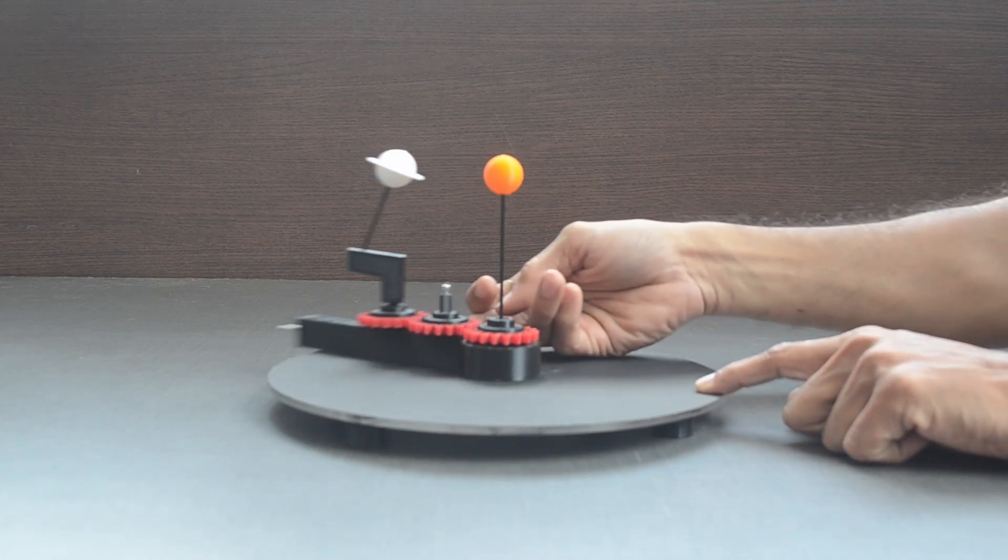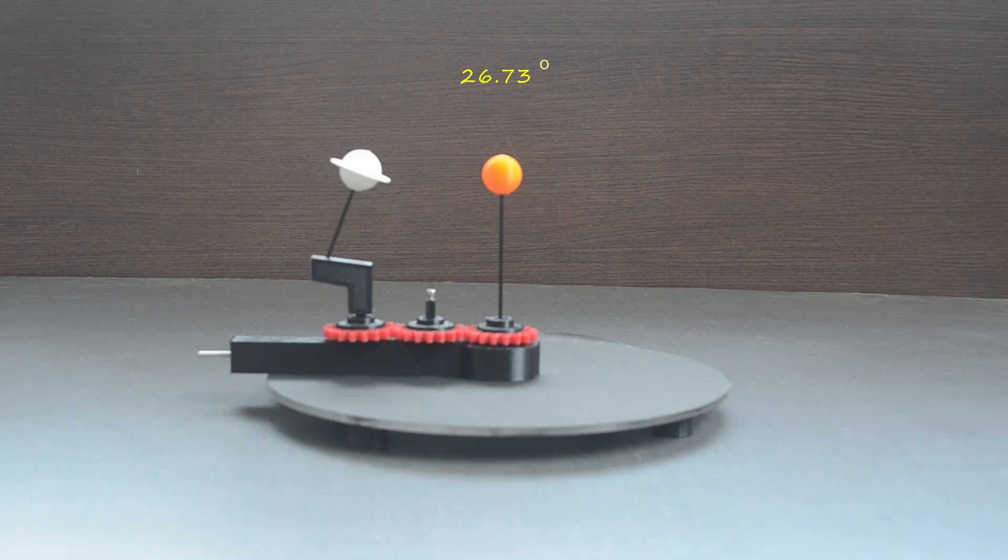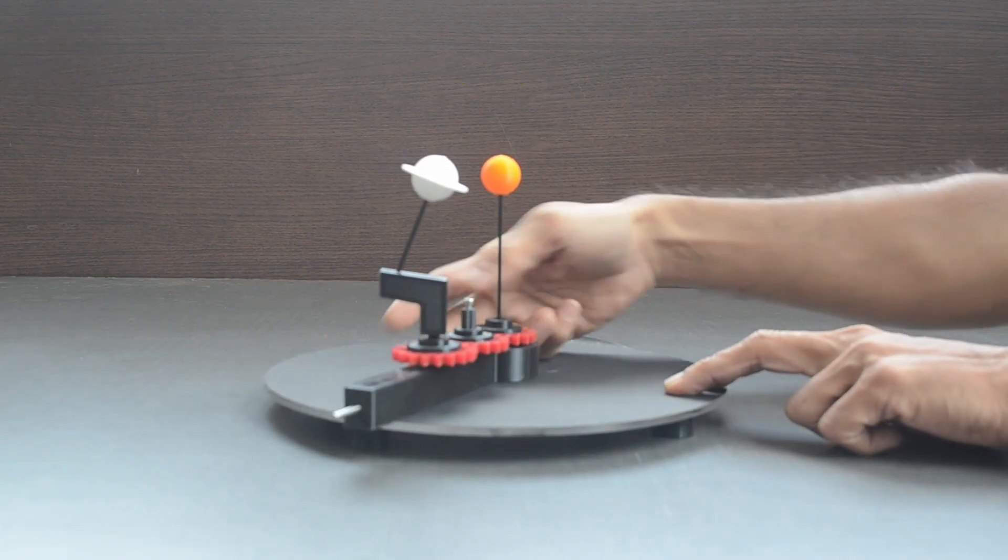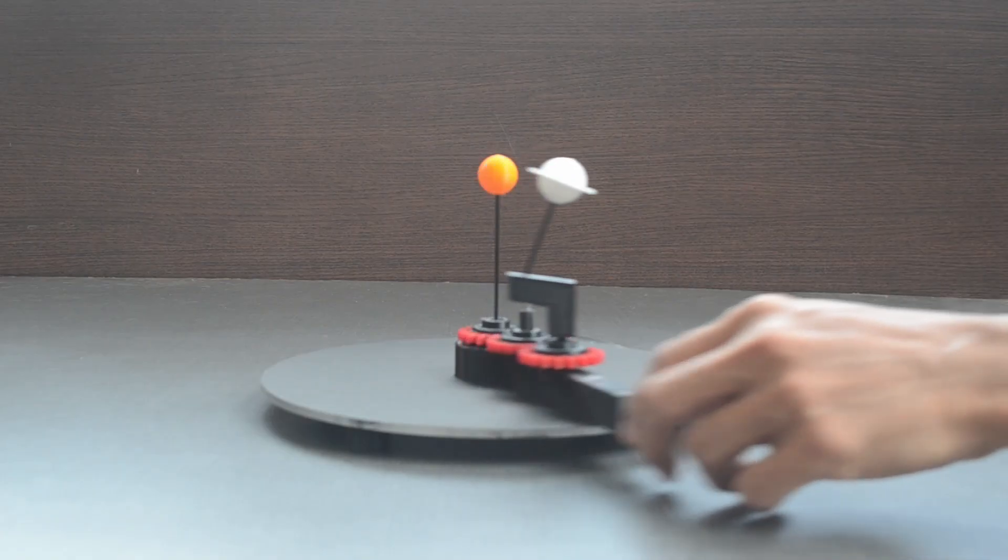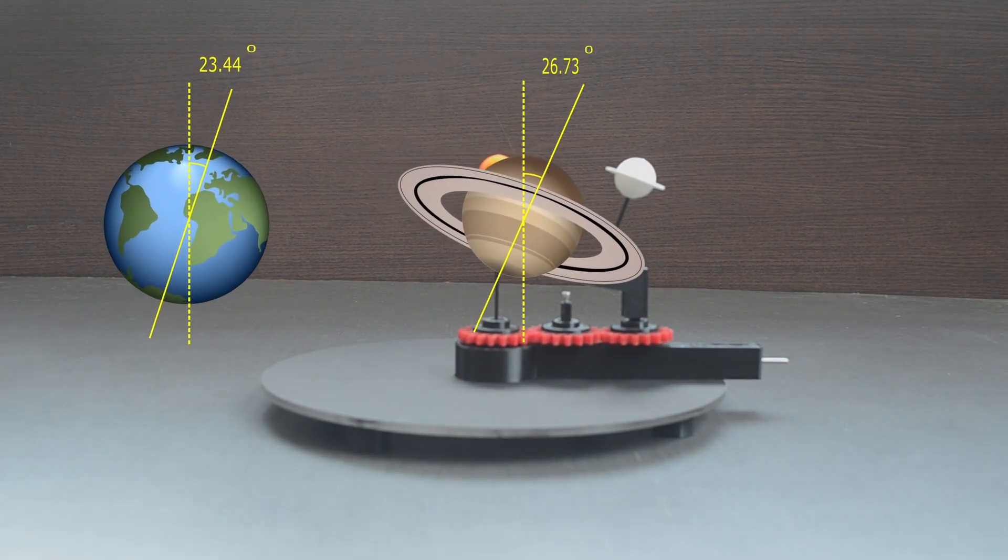During one revolution of Saturn around the sun, the orientation of this axis does not change. This is the main reason why we see its rings positioned differently during its revolution.